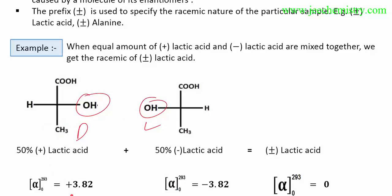That's why the specific rotation of the combined two compounds is zero, because plus and minus cancel each other. This is represented as plus-minus lactic acid. It has two constituents — one levorotatory and one dextrorotatory — and they cancel each other's rotations, so the specific rotation is zero.